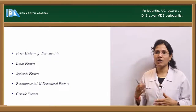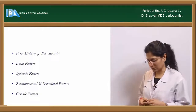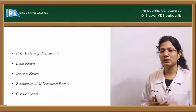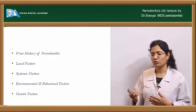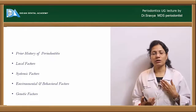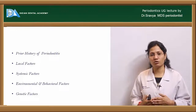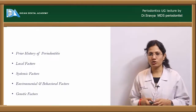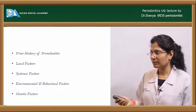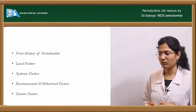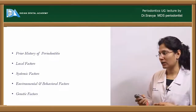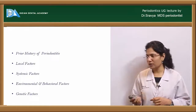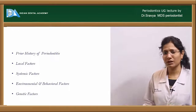Systemic risk factors include diabetes mellitus — periodontitis is considered the sixth complication of diabetes. Uncontrolled blood sugar levels increase susceptibility to periodontal disease. Environmental and behavioral factors include smoking and stress. Genetic factors also play a role, as only certain genetically susceptible individuals develop chronic periodontitis.